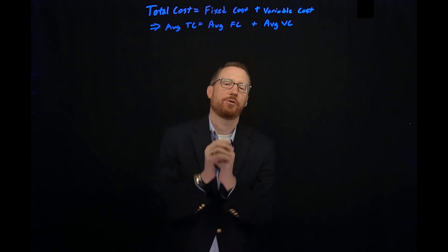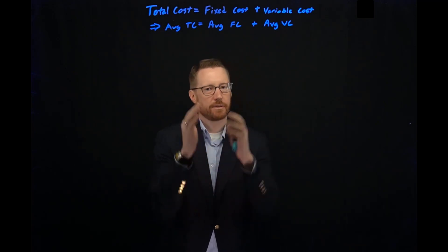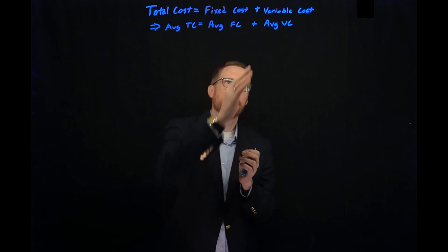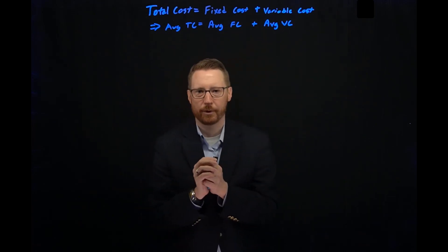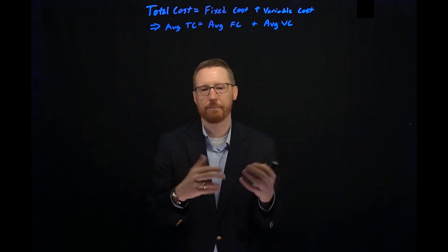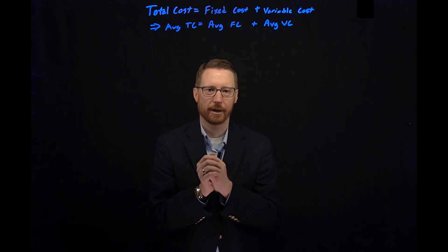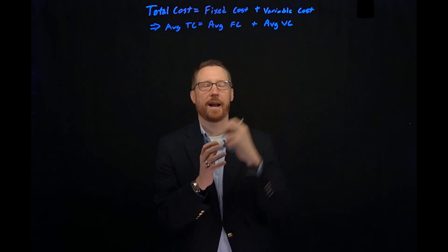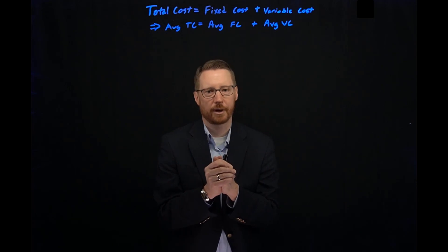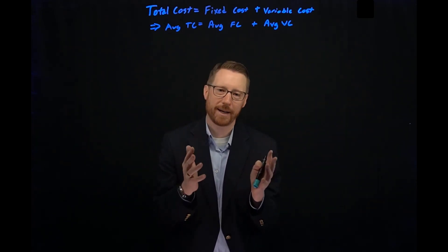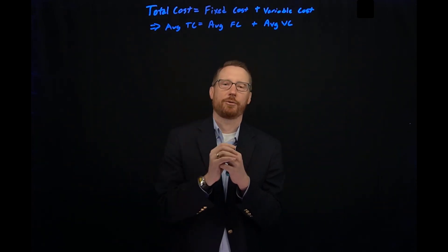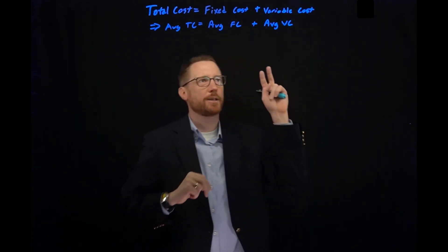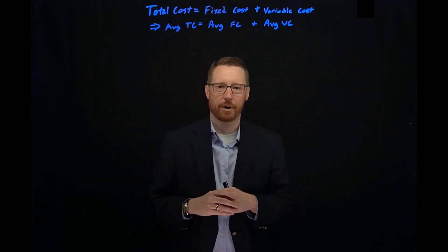So average total cost is the average fixed cost — the fixed cost like rent spread across the quantity of output — plus the average variable cost, the cost of variable inputs like labor, supplies, et cetera. The total of that divided by quantity gives us our average total cost. Not surprisingly, average total cost is just the sum of average fixed cost plus average variable cost.